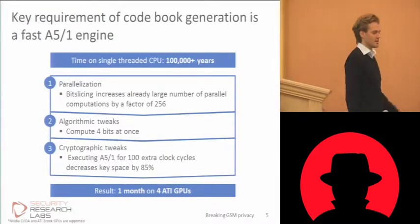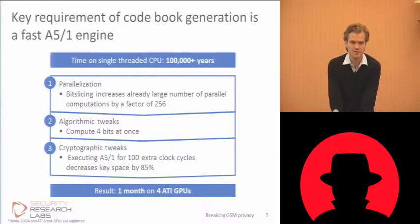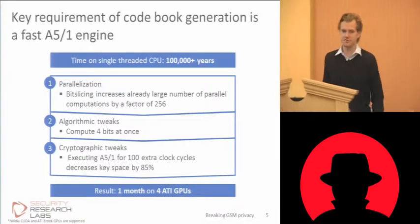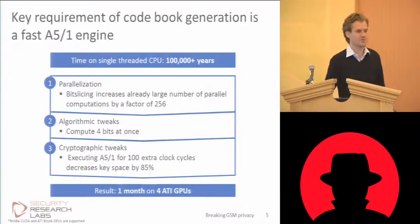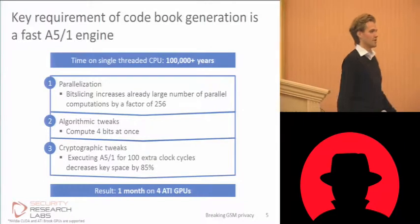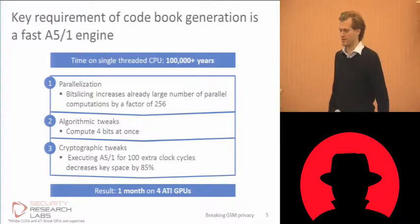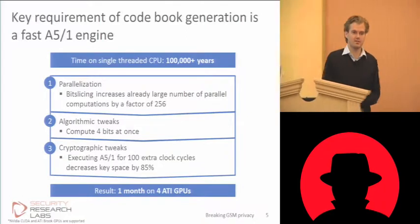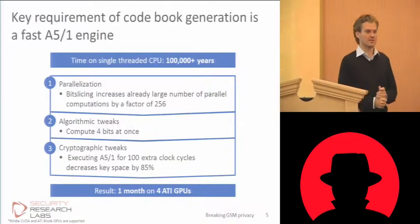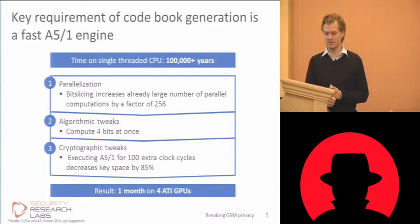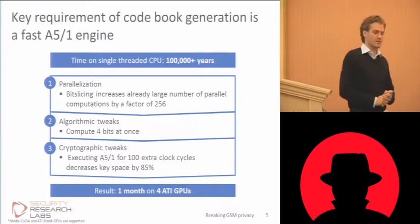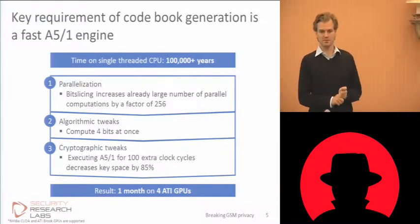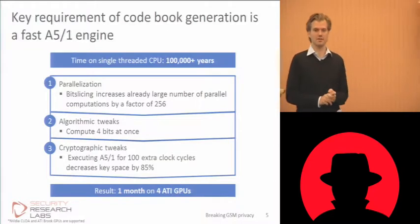Let's focus on the speed of generation first. We did improve — and this is now about a year of engineering — we did improve this disk cracker over and over again, the table generation in particular, through massive parallelization within single machines. GPUs is the key word here, and through changing the algorithm to be parallelizable much better, and to finally find a shortcut in A5/1.